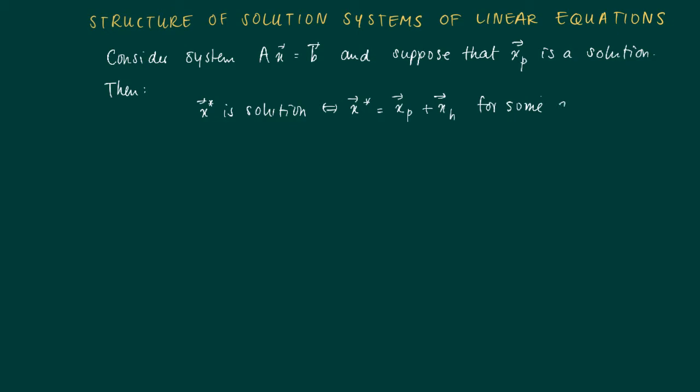So this is part of the homogeneous solution, which is in fact the kernel. So this means that the solution of Ax = B, the complete solution is the sum of a particular solution and the kernel of A.